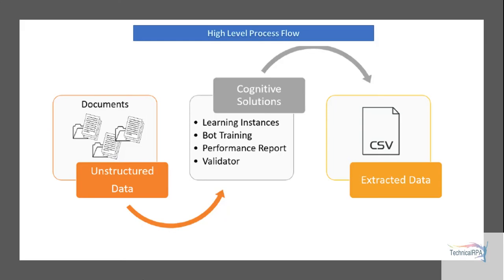For the IQ Bots high-level process: you have scanned images from FTP downloaded — that is unstructured or semi-structured data. The cognitive solution handles the learning of your instances, trains your bot, and gives performance reporting with a validator. Finally it gives the output as CSV, text, Word, or Excel format of extracted data from PDF or image documents. So IQ Bots convert unstructured data into extracted data through intelligent automation.